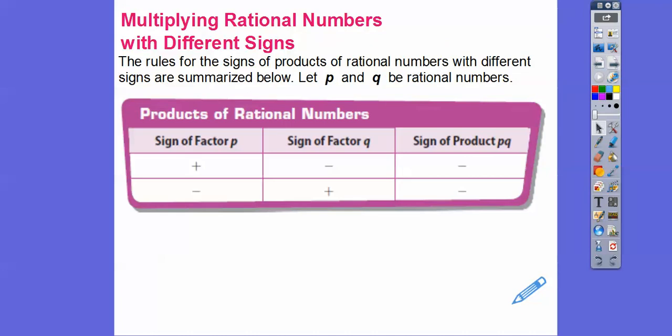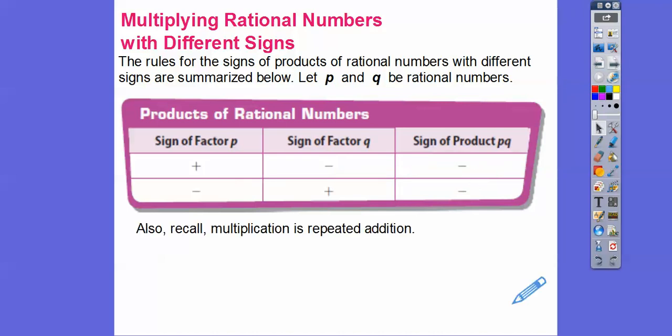So here are the rules for multiplying numbers that have different signs. If you have a positive times a negative, the answer is going to be negative. If you have a negative times a positive, the answer is negative. So if they have different signs, the product is always negative.